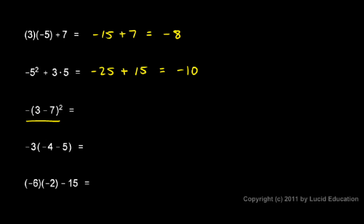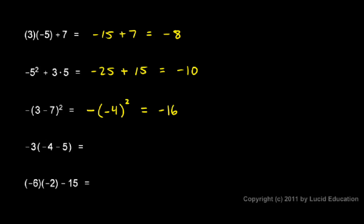Here, negative 3 minus 7 squared. The parentheses say we have to do the 3 minus 7 before we square it. So let's rewrite this, but carry out this operation first. We'll keep this negative sign, and then in parentheses we have 3 minus 7, which is negative 4, and that thing in parentheses is squared. Now we do this squaring before we put this negative sign on. So negative 4 squared is positive 16, and then we have that negative sign stuck on there, so we end up with negative 16 as our answer.